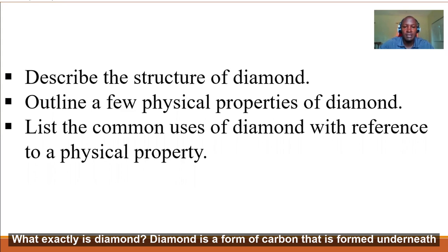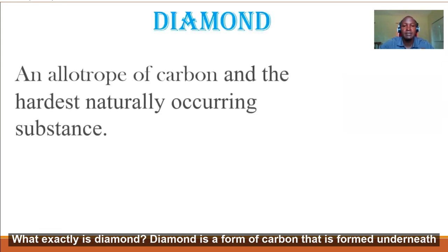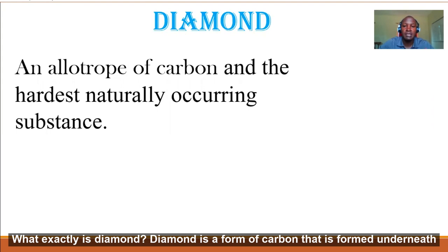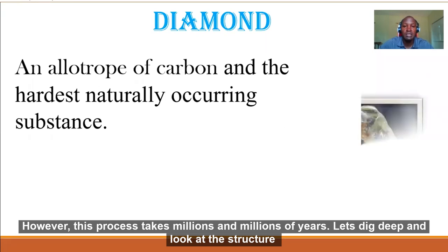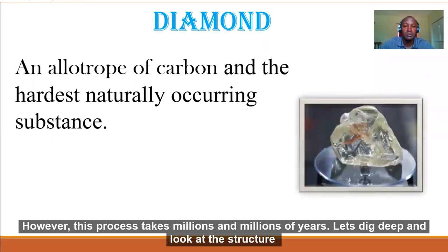What exactly is diamond? Diamond is a form of carbon that is formed underneath the earth's surface with the help of high pressures. However, this process takes millions and millions of years.